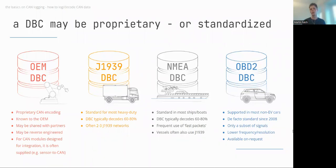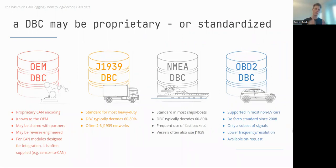Fortunately, there are exceptions for aftermarket users. The free J1939 DBC file is a standardized file that allows you to decode data from most heavy-duty vehicles. Similarly, we have an NMEA DBC file for the maritime sector, and a free OBD2 DBC file for non-electric vehicles. Some proprietary data may still be unknown, but in most practical use cases these standardized DBC files provide the signals you need.